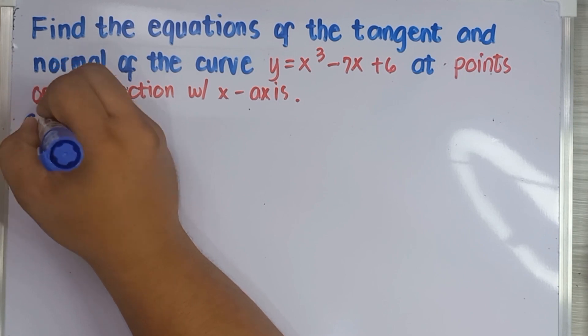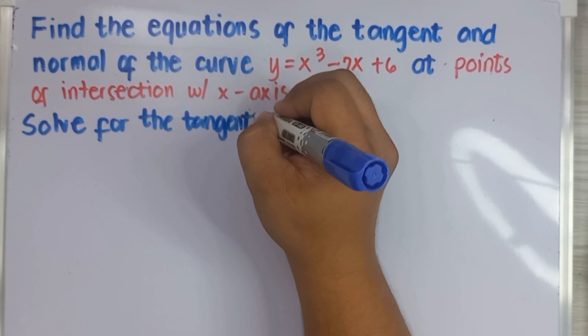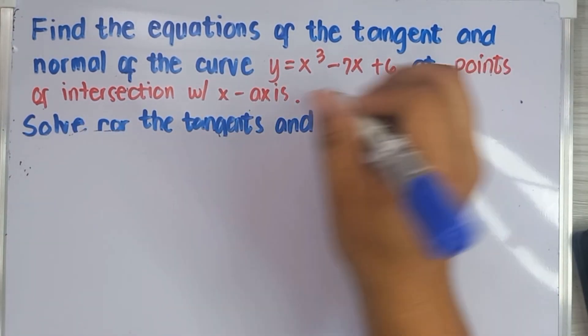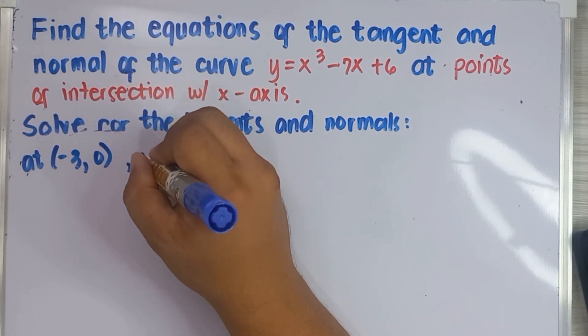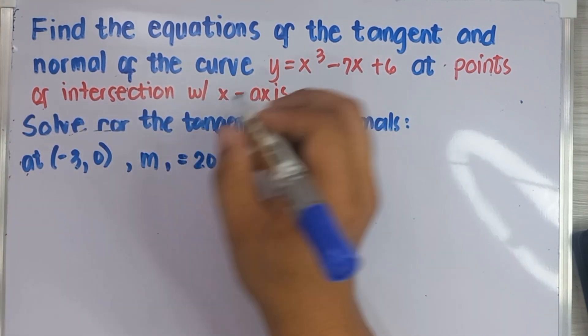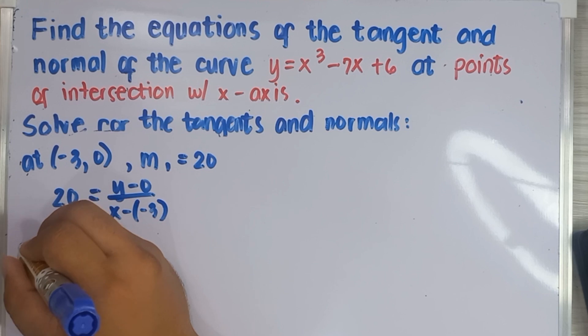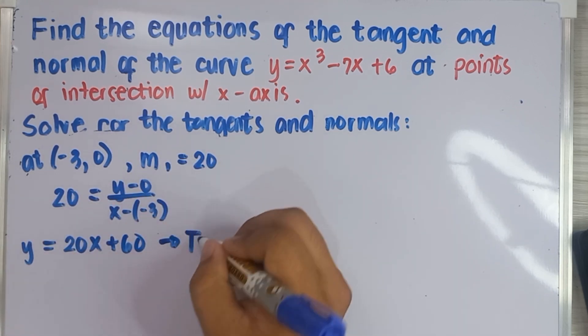Finally, we can now get the equations of tangents and normals. Using the point-slope form at each point with their respective slopes, we obtain the six equations.